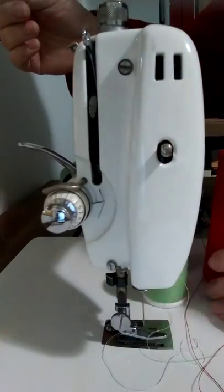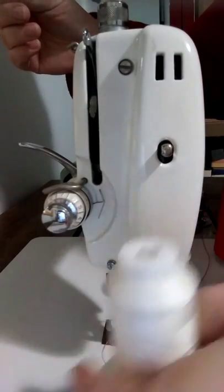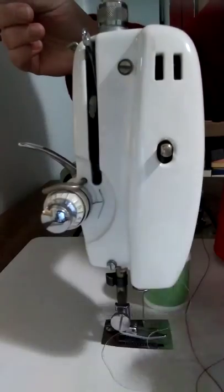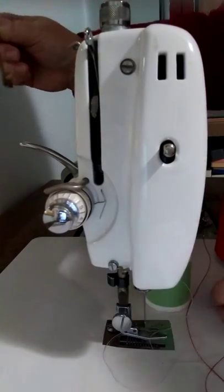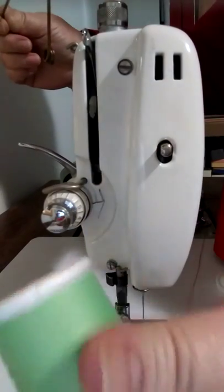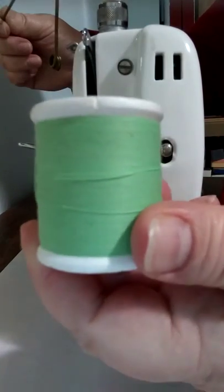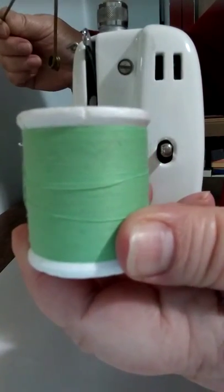With cone thread or crisscross wound thread, it pulls differently and therefore produces a different tension than this kind of thread. This thread is just wound straight across.